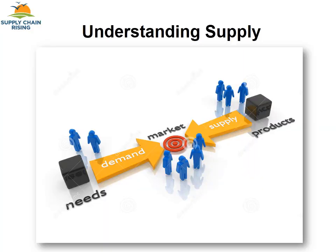The first thing to understand is supply. There is a need generated from users, consumers, or customers. According to their requirement, they present demand in the market. When they go to the market, they get various products and services as per their requirement against different prices. These goods and services in the market are basically supplied by producers, manufacturers, and large processing organizations.